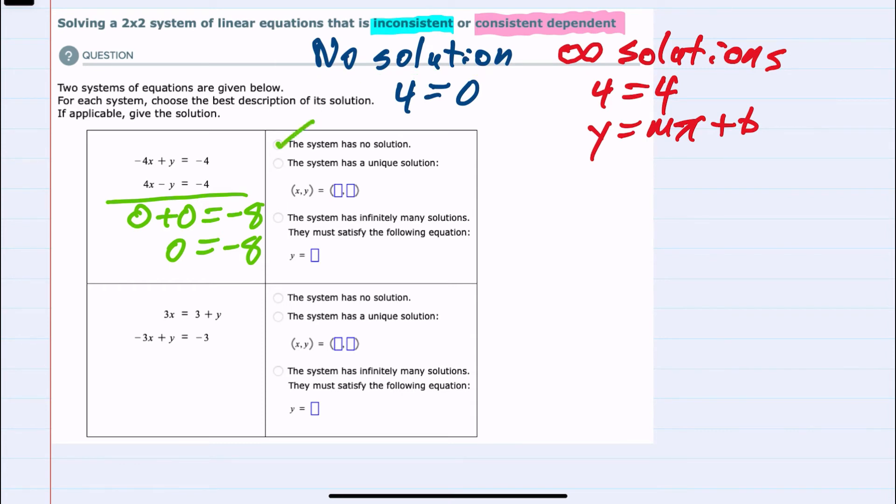The second system we could also approach by elimination because on the left-hand side, even though they're not lined up, I see I have a 3x in the top and a minus 3x in the bottom. So if I add, the 3x minus 3x would cancel, leaving me with 0x. I would still have the y on the left-hand side, and adding on the right-hand side, in this case, the 3s cancel, plus 3 plus a negative 3 cancels, but I still have the y.